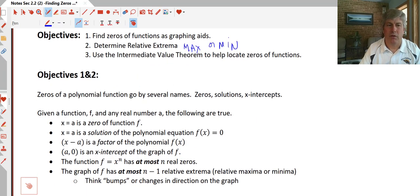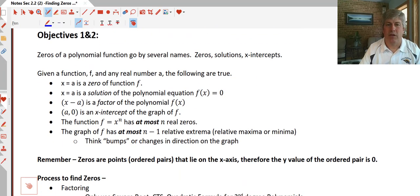Zeros of functions go by several names: obviously zeros, solutions, x-intercepts, any of those will do. Given a function f and any real number a, the following are true about the zeros. We'll say x equals a is a zero of the function. x equals a could also be a solution of the function where f(x) equals zero, so f(x) here is our y equals zero.